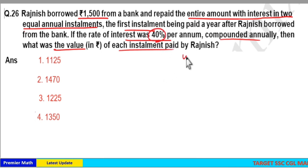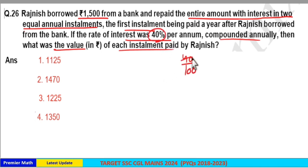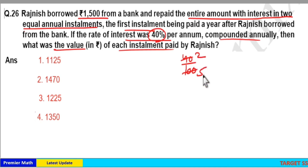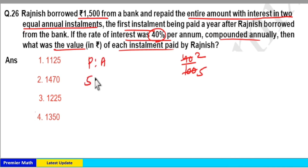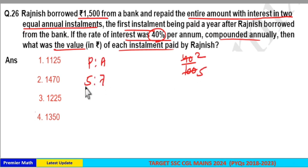Here 40% is the rate. 40% means 40 by 100 — 20 goes 2 times in 40 and 5 times in 100, so 2 parts interest generated out of 5 parts principal. Taking the principal to amount ratio: principal is 5 parts and amount is 7 parts for one year, giving a ratio of 5:7.